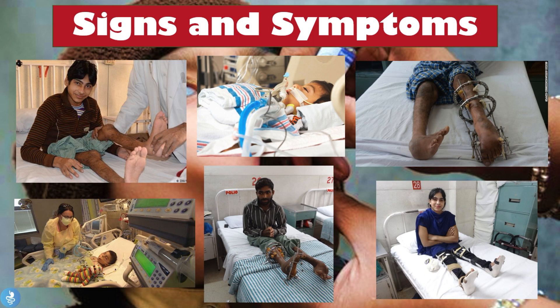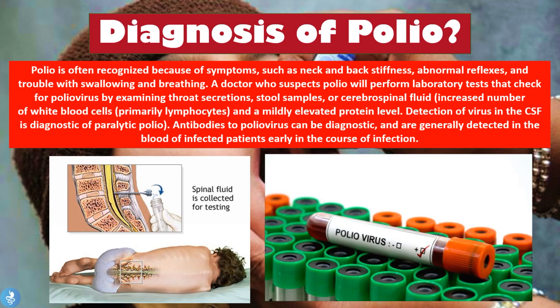Moving on to the diagnosis of polio: polio is often recognized by symptoms such as neck and back stiffness, abnormal reflexes, and trouble with swallowing and breathing. A doctor who suspects polio will perform laboratory tests by examining throat secretions, stool samples, or cerebrospinal fluid (CSF). The CSF usually shows an increased number of white blood cells, primarily lymphocytes, and mildly elevated protein levels. Detection of the poliovirus in the CSF is diagnostic of paralytic polio, and antibodies to the poliovirus from blood samples can also be detected early in the course of infection.